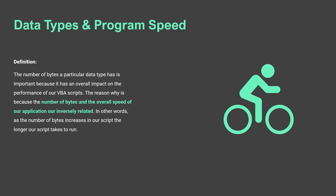Data types and program speed is also important. The number of bytes a particular data type has impacts the overall performance of our VBA scripts. The number of bytes and the overall speed of our application are inversely related — as the number of bytes increases, the longer our scripts take to run. As much as we would like to always default to the VBA default data type, it takes up a lot of memory and if we use too much memory our programs will take a very long time to run. We want our programs to run fast and smoothly, so we need to be aware of the data types we're using.